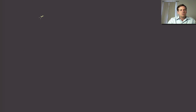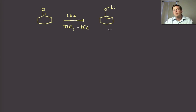I just want to show you an example of the use of LDA to generate an enolate. We could take something like cyclohexanone, we could treat this with LDA. THF is the typical solvent, minus 78 degrees. This keeps everything from doing naughty side reactions. And if we do that, we get to our lithium enolate.